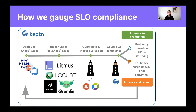Once the tests are finished, we need to evaluate based on some data — let's say from Prometheus or Dynatrace; it can be any data provider. We reach out to the data provider, querying the data based on the SLOs we want to evaluate, and then make a decision: are our SLOs still met? Then we can consider this a resilient application based on the resilience criteria we have defined in our SLOs. Or if they are not met, we have identified the weakness and can go back and improve our application.